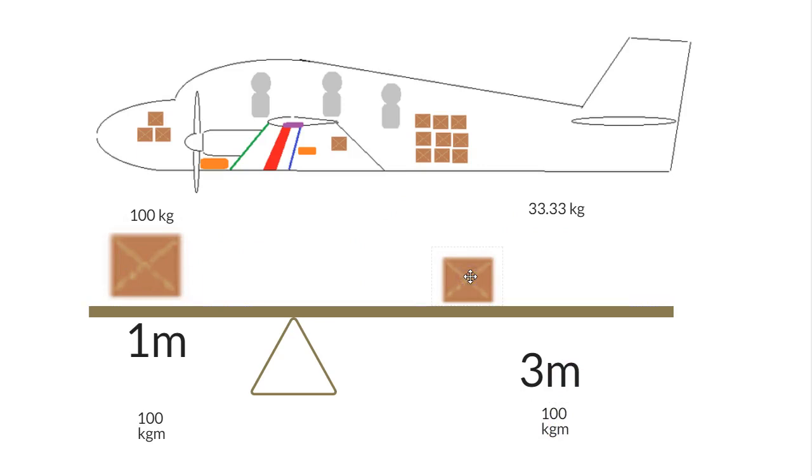Okay, if we shifted that, we would need to, if we shifted it back to two meters, then that would now only equal 66, and this end would be way heavier. It would be out of balance. So we'd either need to shift that, or we'd need to add weight to this side to get it to balance back out.